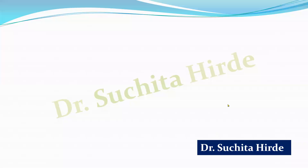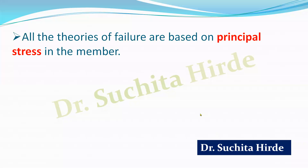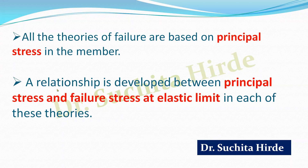To solve the numerical example on theories of failure, you must have knowledge of principal stress. All these theories of failure are based on principal stress in the member. A relationship is developed between principal stress and failure stress at the elastic limit, which is calculated using a tension test on the member in each of these theories.